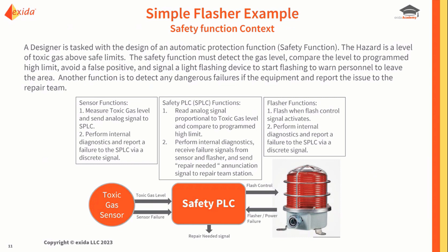It's easier to explain by just showing you an example. Imagine a safety instrumented function that has a toxic gas sensor, a safety PLC, and as the final element, a flasher — a device that flashes when the control signal activates to give a warning to personnel in the area that toxic gas has been detected. We're going to focus on the final element, the flashing annunciator.